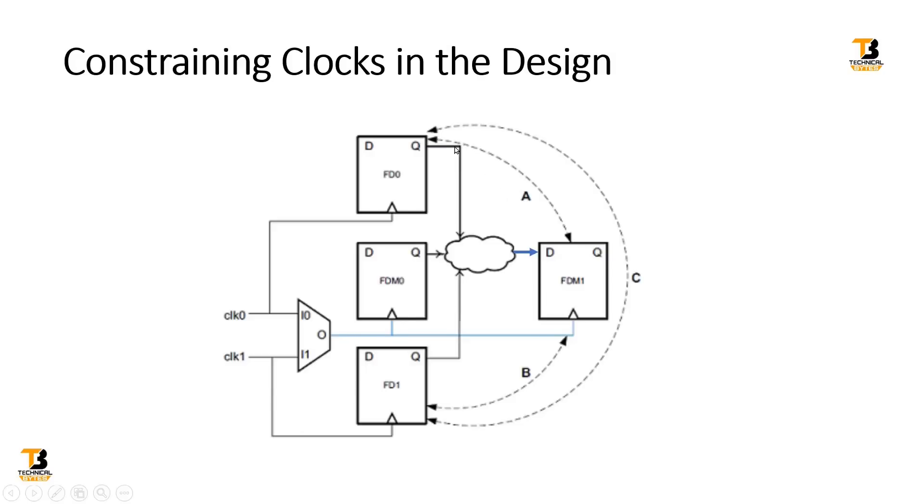Similarly, assume there exists a path C, which is not shown here. This means the output of FD0 can go to the input of FD1, and there's another path where FD1 output goes to FD0. Other paths from FDM1 to FD0 and from FDM1 to FD1 are also not shown here.